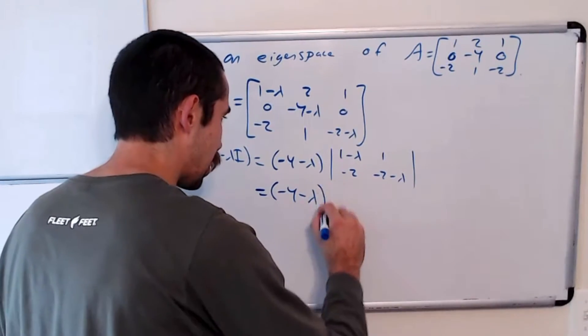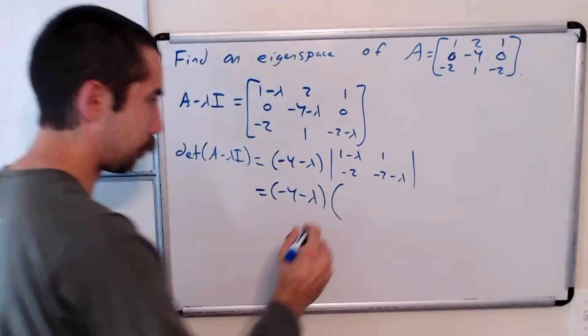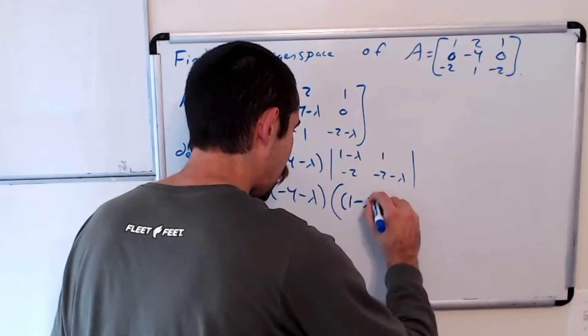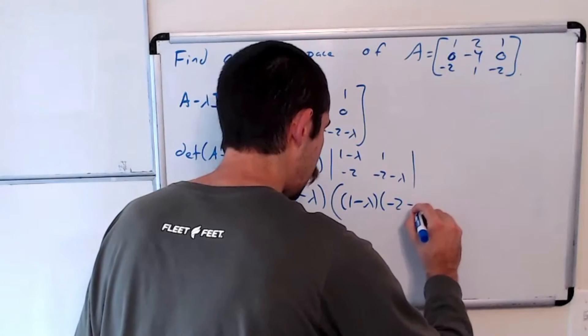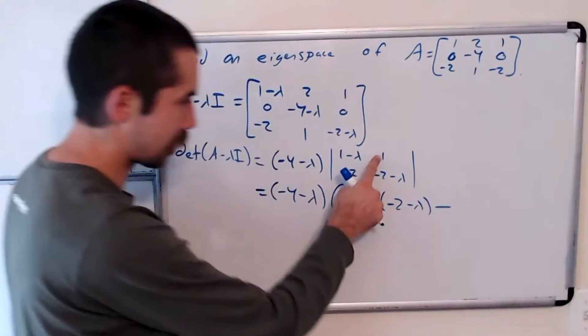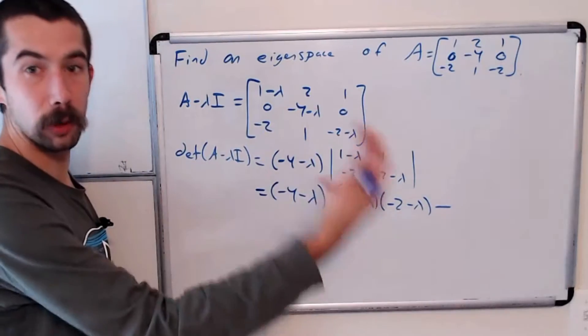So we have negative 4 minus lambda times 1 minus lambda, negative 2 minus lambda minus 1 times negative 2, so plus 2.